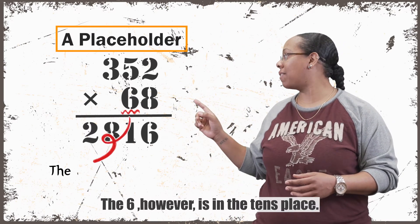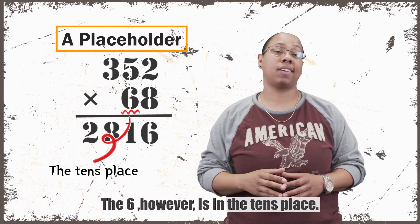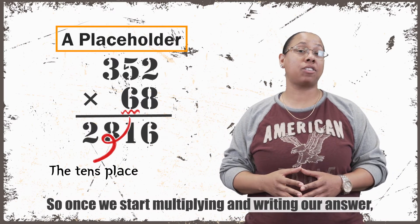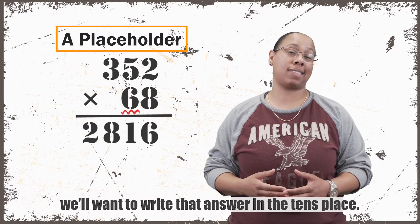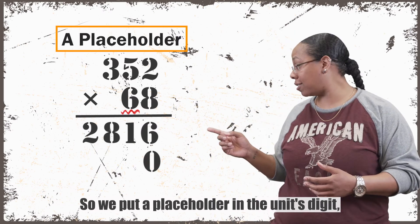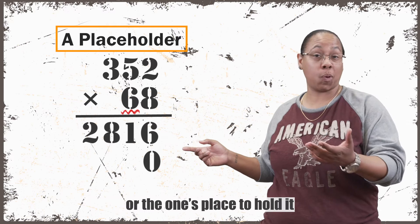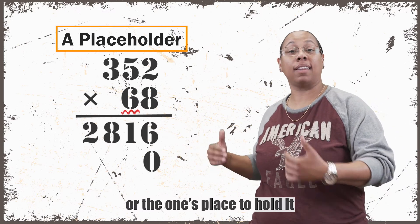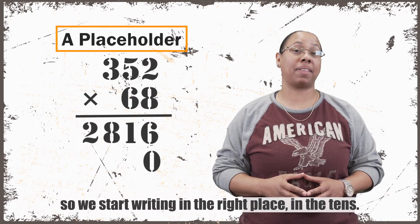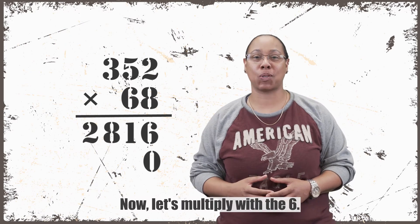So notice when we started with the 8, the 8 is in the units digit. So when we started writing our answer below, we wrote it in the units digit. The 6, however, is in the tens place. So once we start multiplying and writing our answer, we'll want to write that answer in the tens place. So we put a placeholder in the units digit to hold it so we start writing in the right place, in the tens. Now let's multiply with the 6.